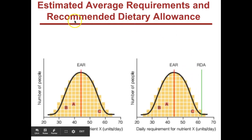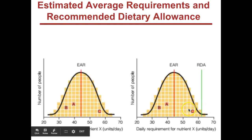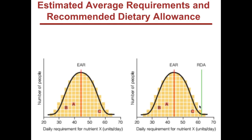So what is the recommended dietary allowance? This is the amount recommended by the USDA for you to include in your diet every day. The recommended dietary allowance, the RDA, is the amount of Nutrient X required for 97.5% of people — including persons A, B, and C — to get enough of Nutrient X.